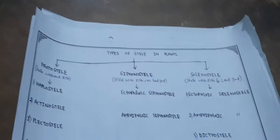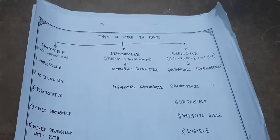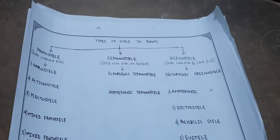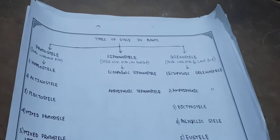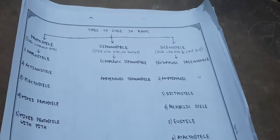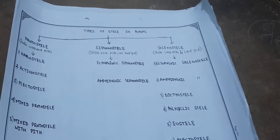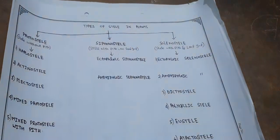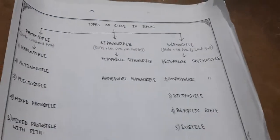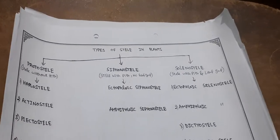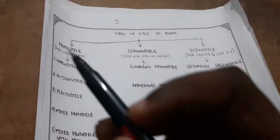Here are the types of steles in plants. They are totally divided into three types: protostele, siphonostele, and solenostele. Some authors say that solenostele is the subdivision of siphonostele — you can write it in either way.